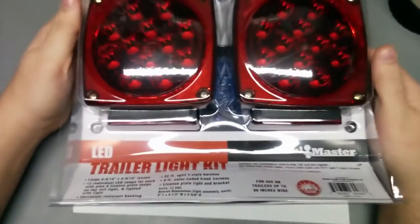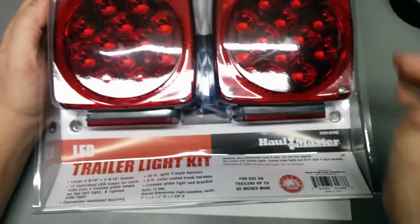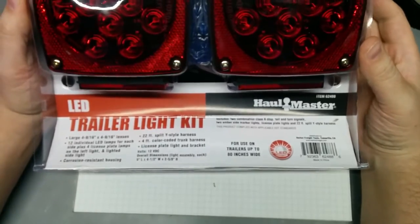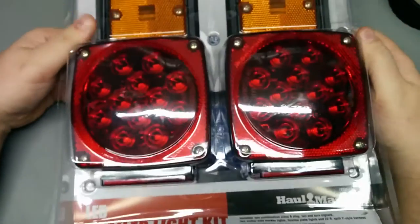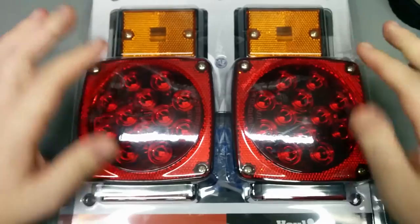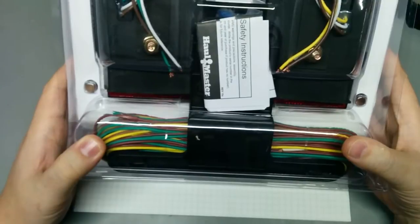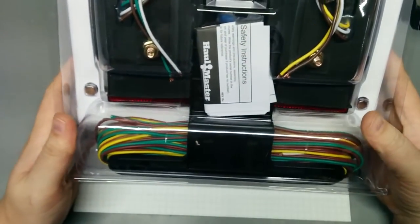So what they sent was this thing. Item number 62488, the LED trailer light kit, which includes both the indicators, the two tails, and a full wiring harness. So a lot of stuff I won't be using, but they sent it out in the mail anyways.